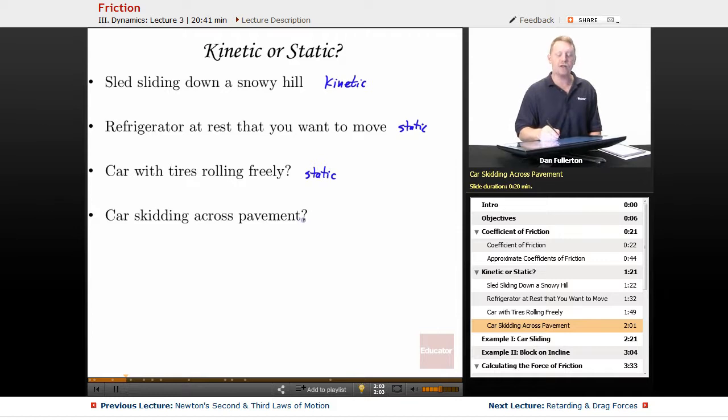Now, if you happen to skid across the pavement, now you have sliding or kinetic friction. And when you're using that coefficient of friction, you will use either the kinetic mu k or the static mu s coefficient.